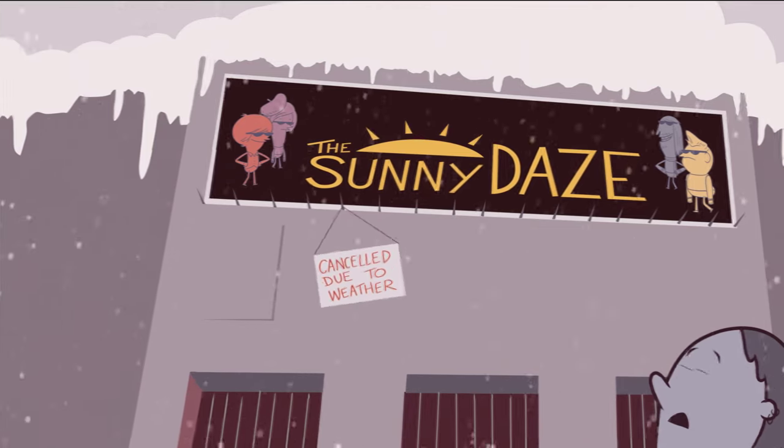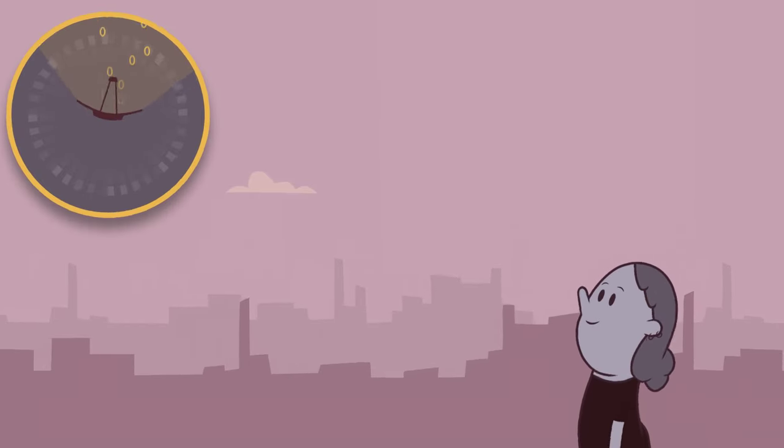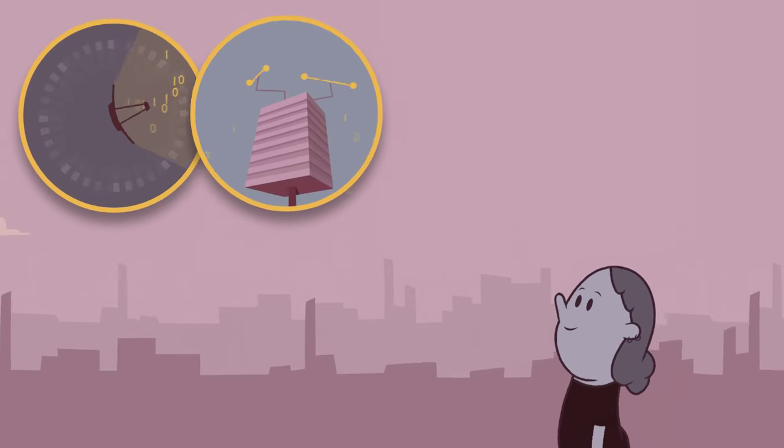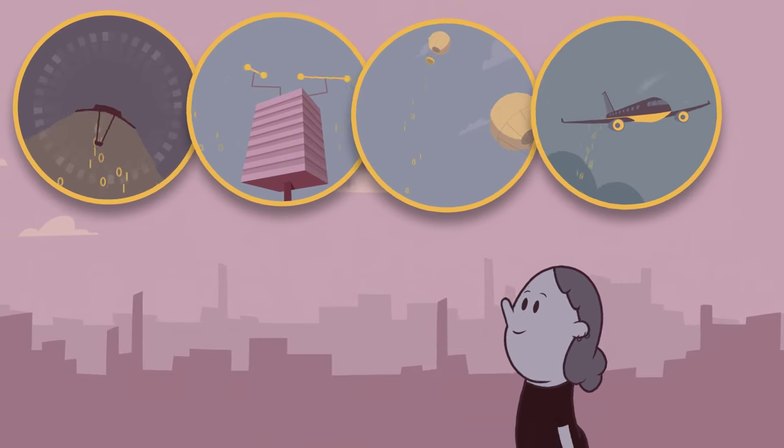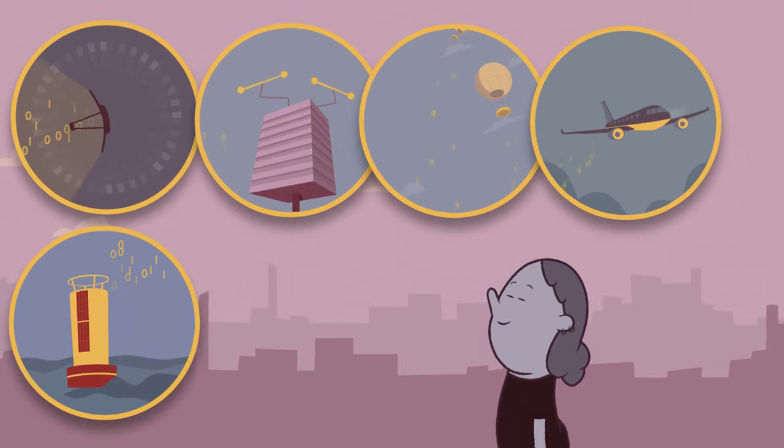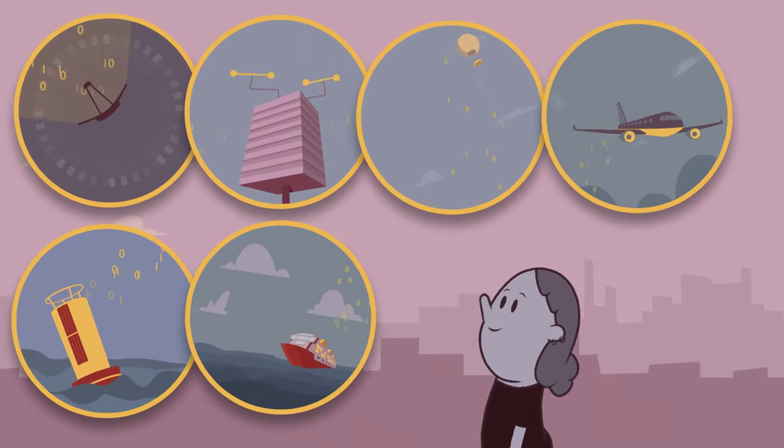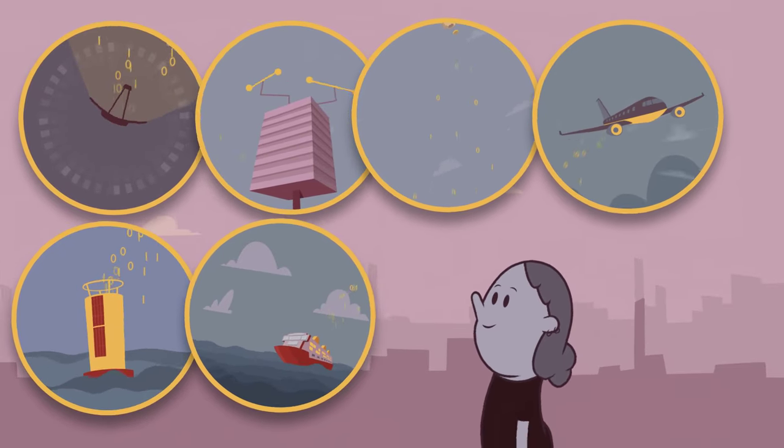While you're busy with your everyday life, a global network of gadgets scan and measure the atmosphere, collecting data from all over the world. Radar systems, weather balloons, ocean monitoring buoys and lots of other cool instruments track changes to help predict the weather.